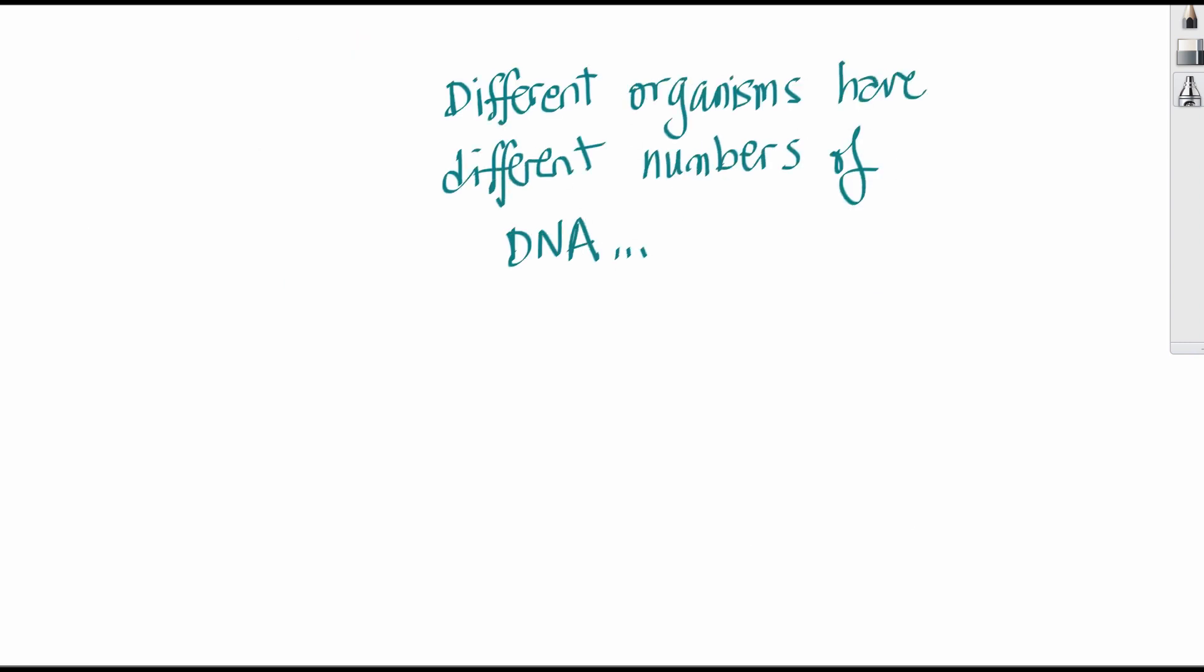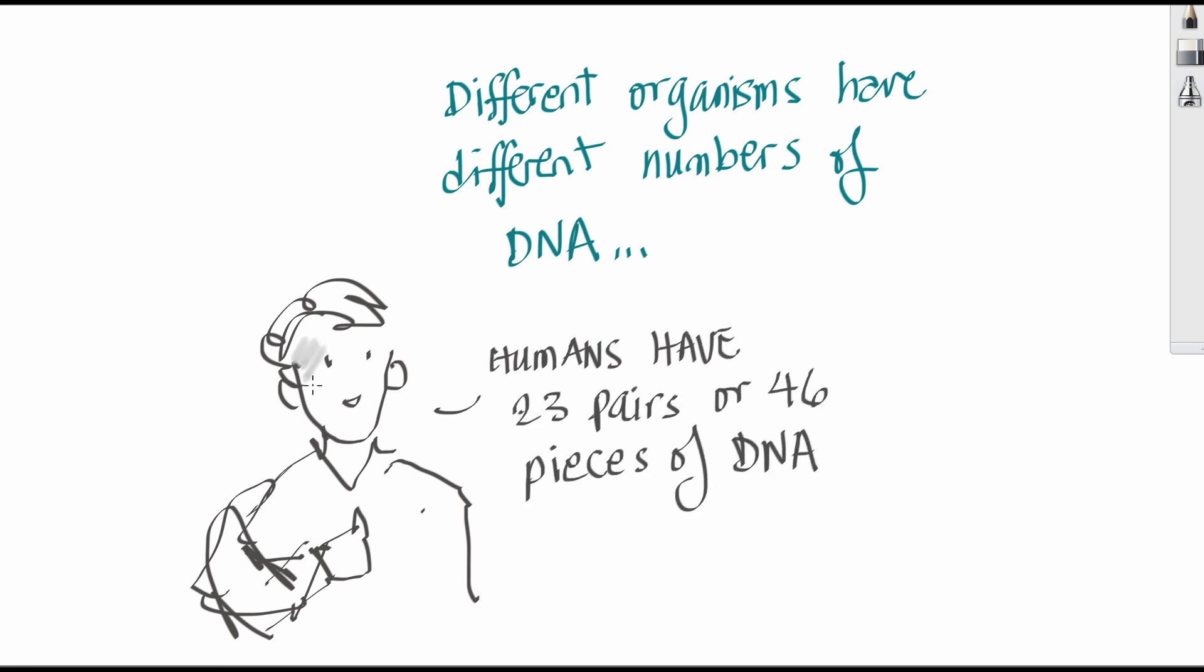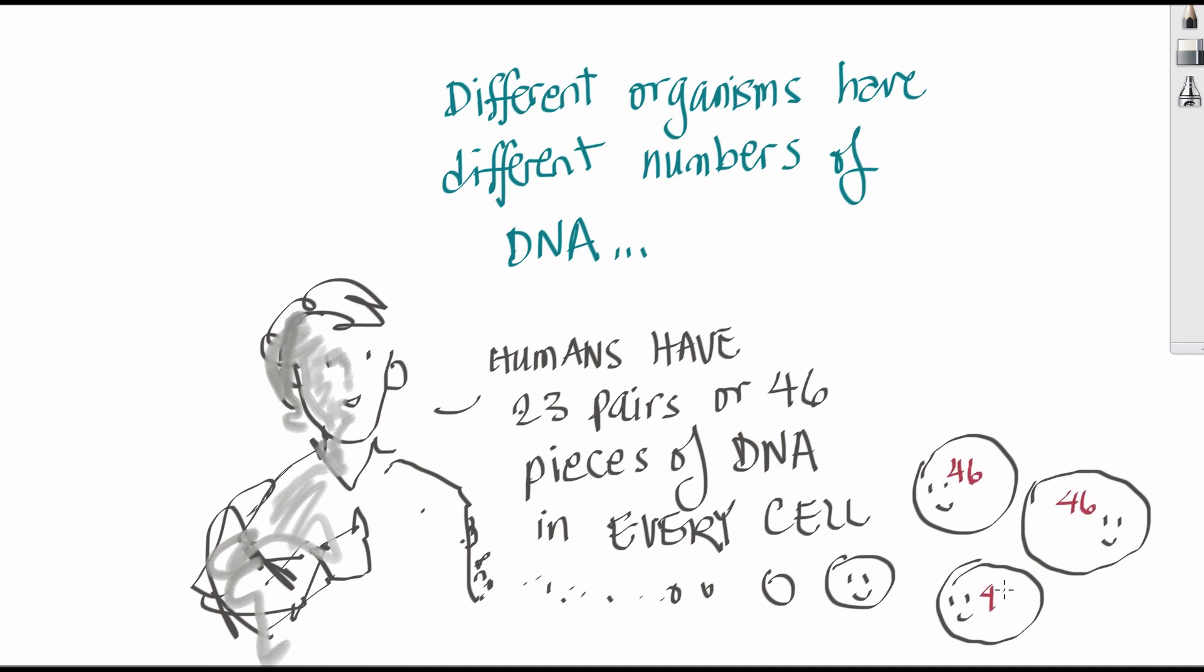Different organisms have different numbers of DNA. Humans have 23 pairs, or 46 pieces of DNA, in every cell of their body.